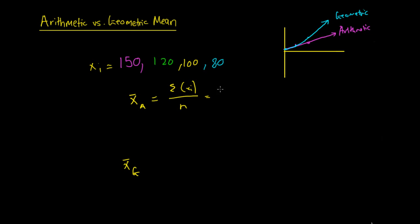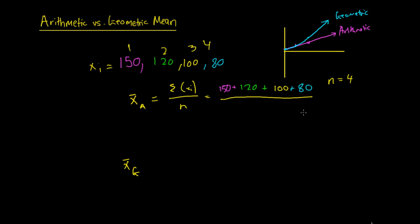For this series here, what we do is take 150, add 120, add 100, and add 80, then divide by the total number of observations. We've got one, two, three, four observations, so we divide by n = 4. Our arithmetic mean is 150 + 120 = 270, + 100 = 370, + 80 = 450, divided by 4, which comes out to be 112.50 — or 112 and a half.